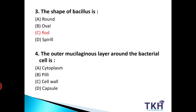और जो cocci हैं वो हमें oval या फिर round दिखाई देते हैं। Next, question number four: the outer mucilaginous layer around the bacteria is called — Option A: Cytoplasm. Option B: Pili. Option C: Cell wall. Option D: Capsule. तो हमारा answer है Option D: Capsule.